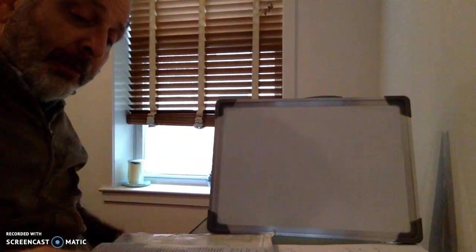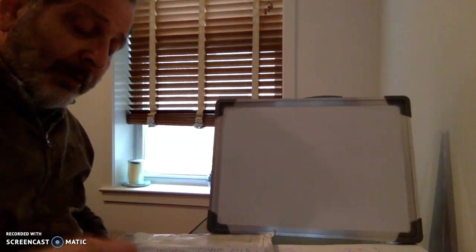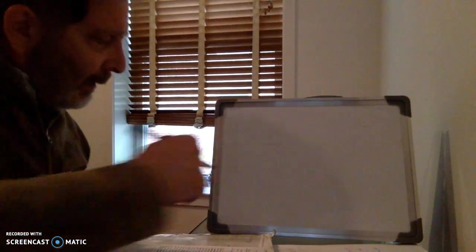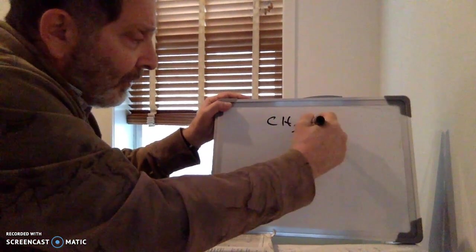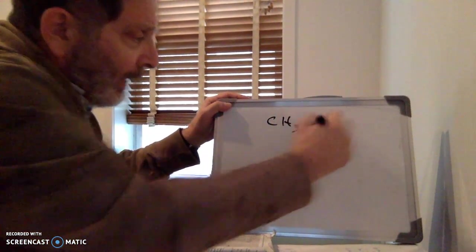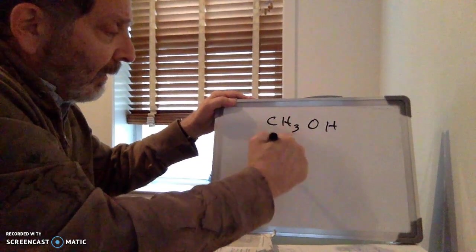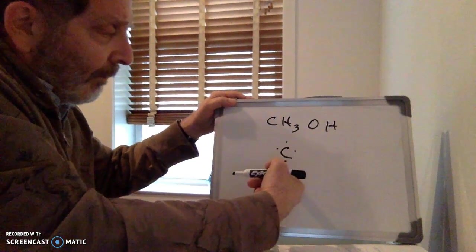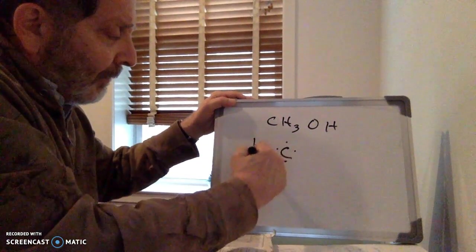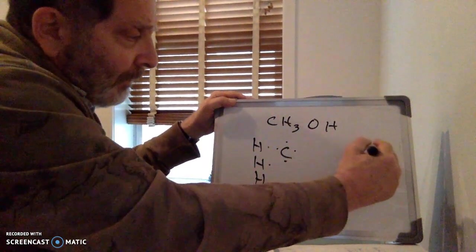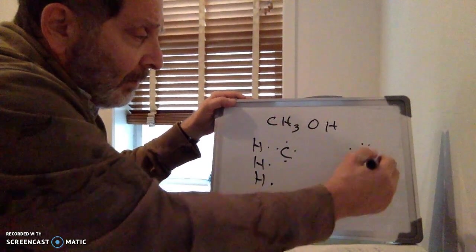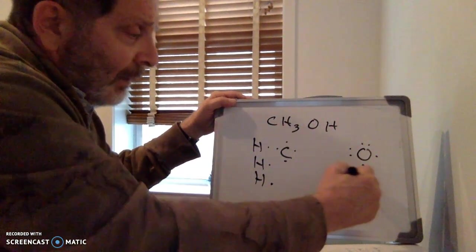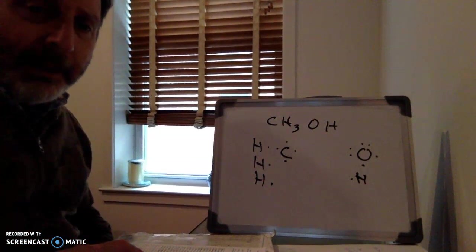The last one. The textbook said for methanol, do the CH3 group first and then add on the OH. Well, okay. Here's carbon and three hydrogens. And then if I have an oxygen, which has got six, and a hydrogen. How can that all combine together?